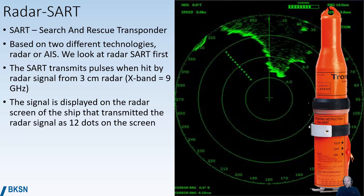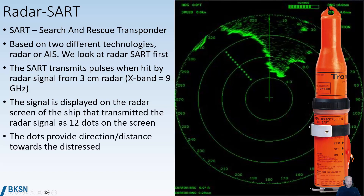The signal appears as 12 dots on the screen, and we can see this on the image of a radar screen here. These 12 dots indicate that a SART has been activated, and the position of the SART will be at or near the nearest dot. The dots provide direction and distance towards the distress.